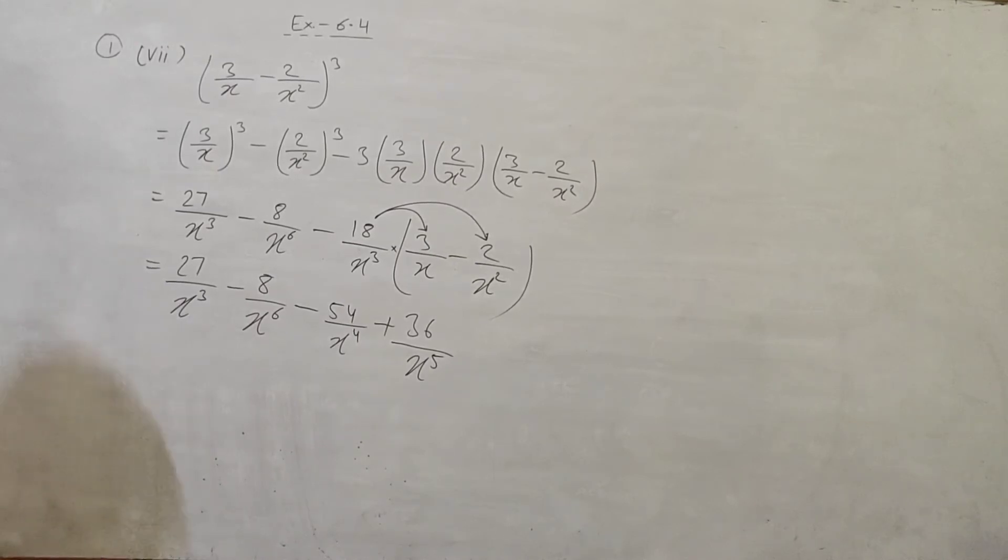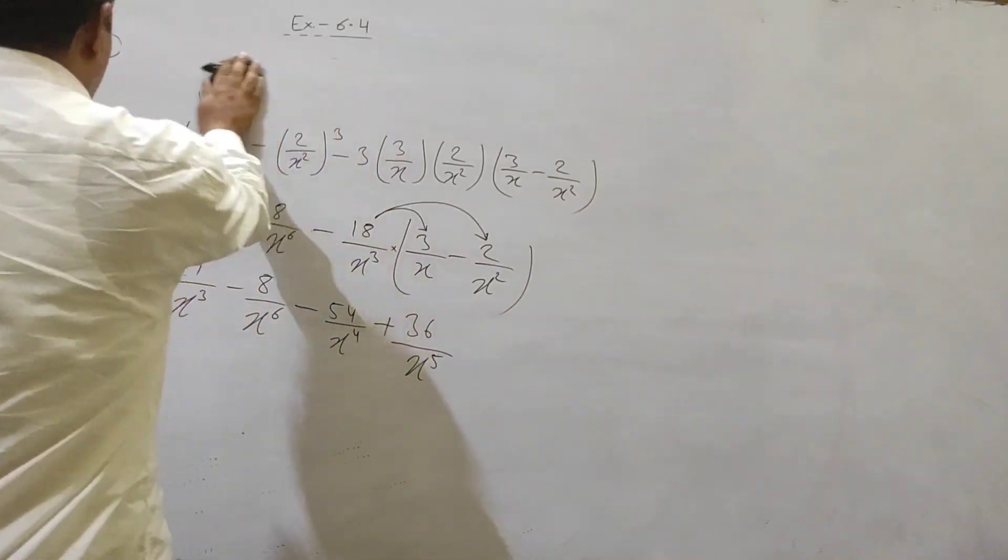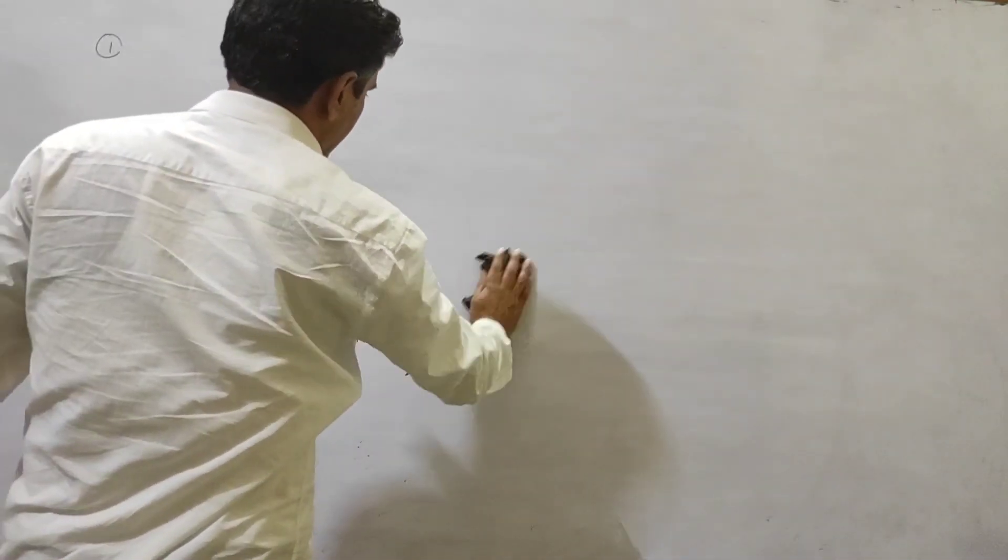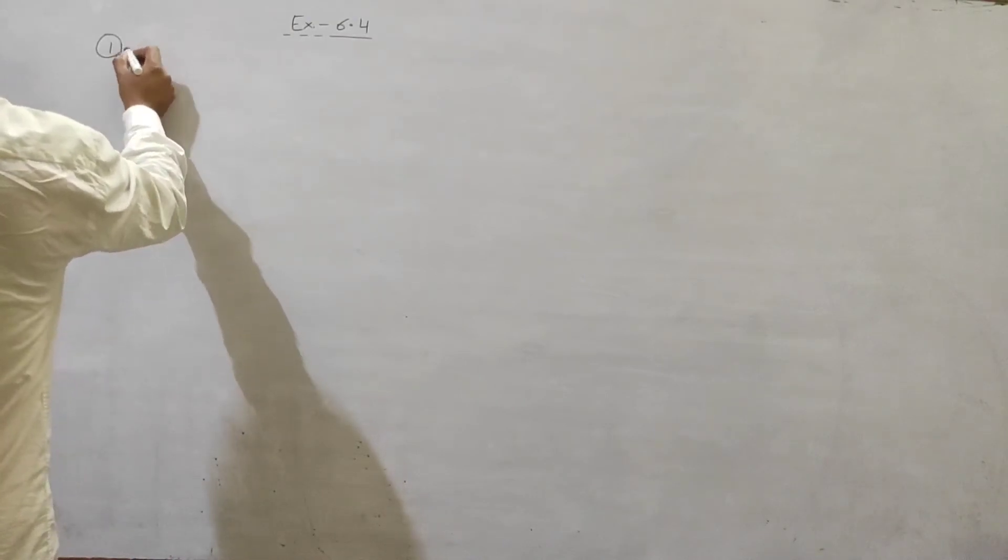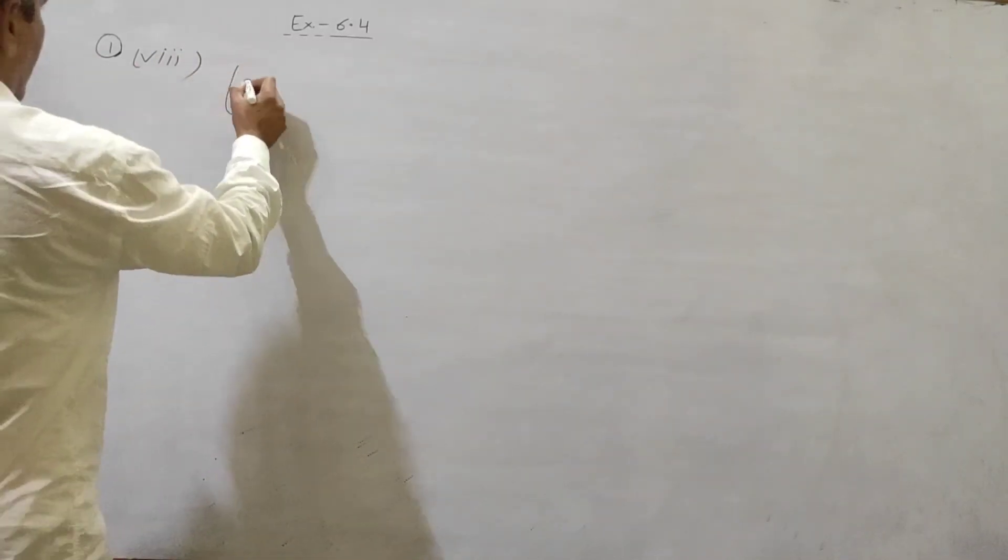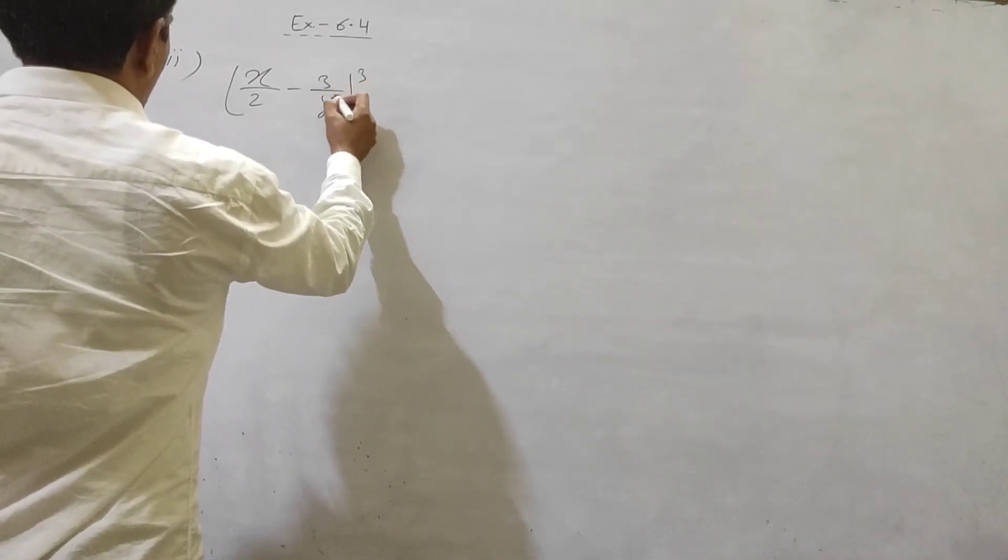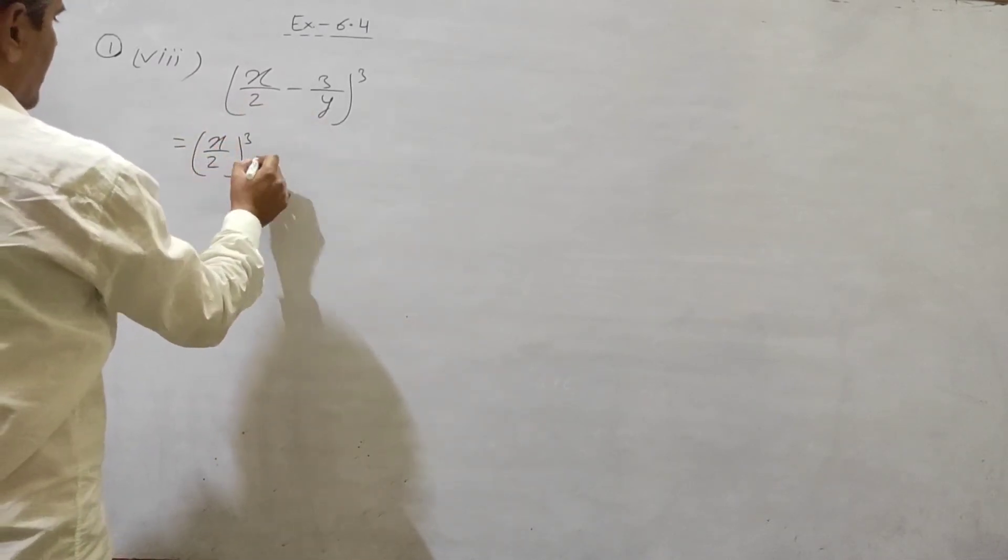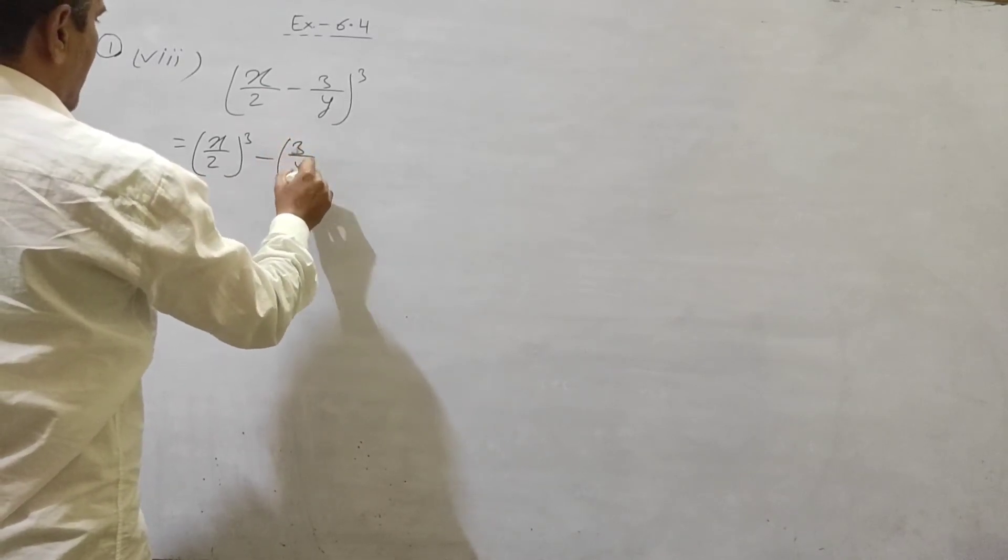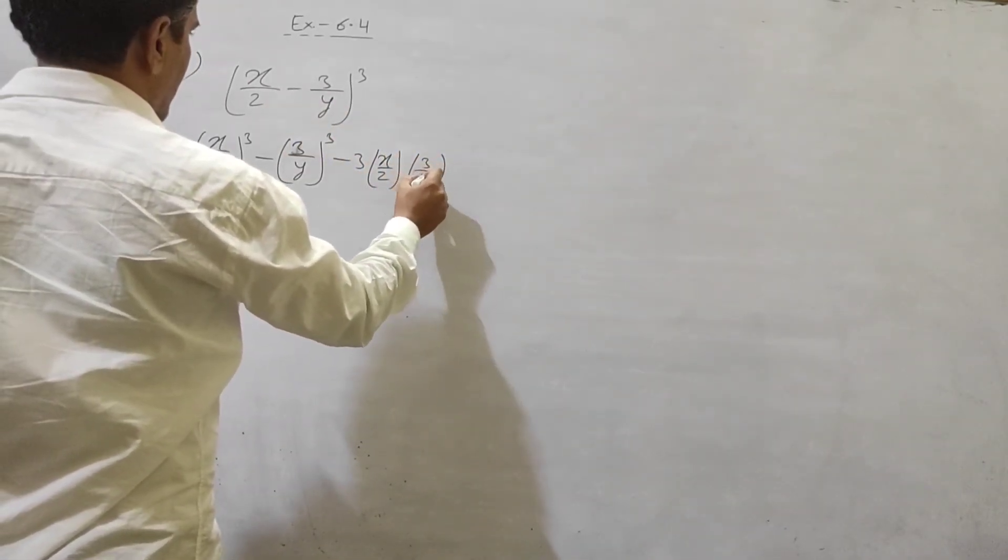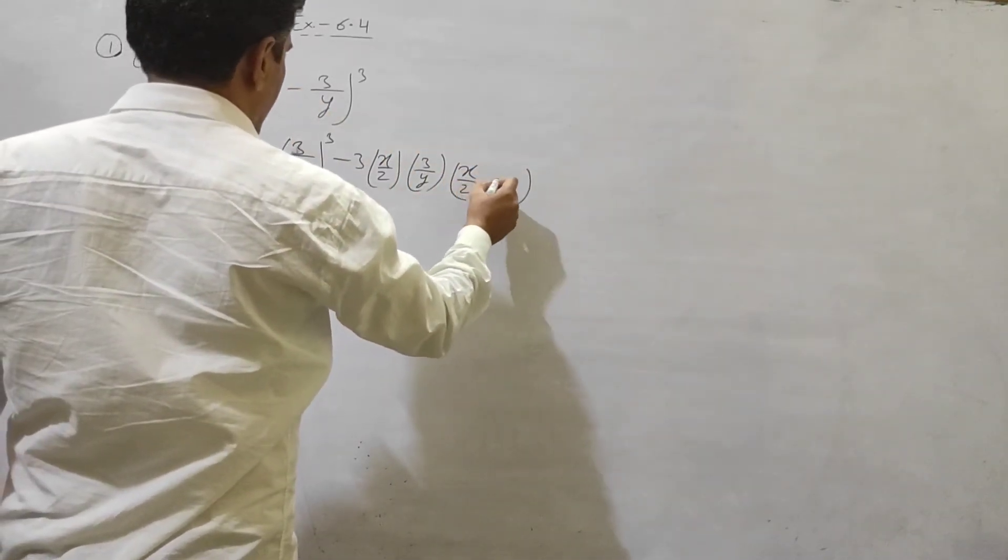Now 8th part of the question, similar hai by using the property a minus b whole cube: a cube a cube minus b cube minus 3ab ko multiply karna hai with a minus b. 8th part of the question. x by 2 minus 3 by y whole cube. A minus b whole cube, first wala a second wala b. A cube x by 2 whole cube minus b cube minus 3 by y cube minus 3ab 3 x by 2 3 by y multiply with a minus b x by 2 minus 3 by y.